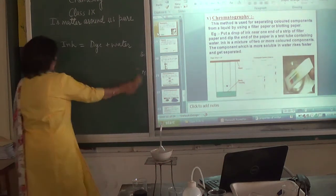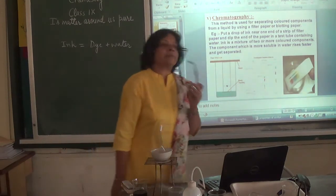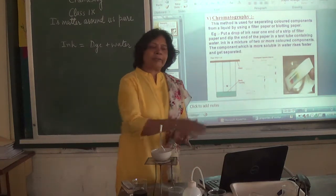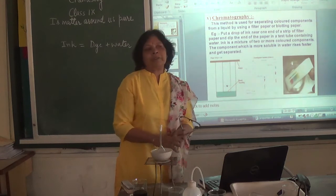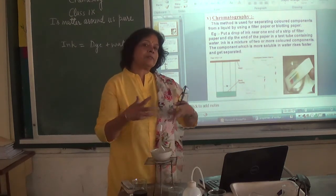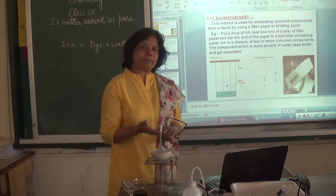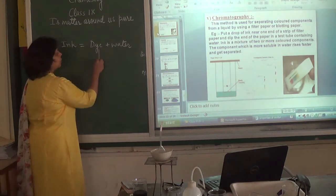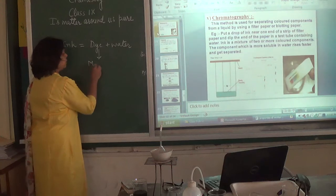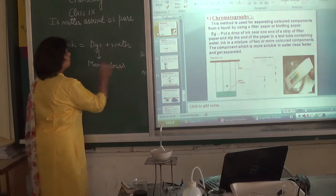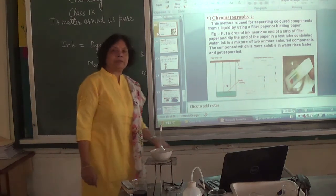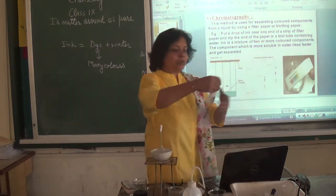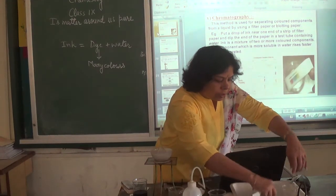Chromatography was first used to separate colors — 'chroma' in Greek means color — that is why this technique was called chromatography. Chromatography is a technique used to separate a mixture of solids which are soluble in a common solvent. For example, ink is a mixture of dye in water, but the dye itself is not a single substance — it is again a mixture of many colors. If I want to obtain individual colors from the dye, I use a method called chromatography, specifically paper chromatography, using a special paper called chromatography paper.